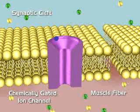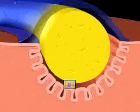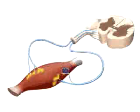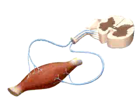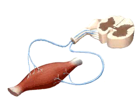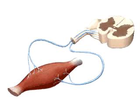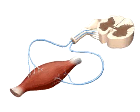The action potential spreads along the muscle fiber. As more nerve branches activate additional fibers, the action potential spreads over the entire muscle. Upon activation, the muscle contracts.